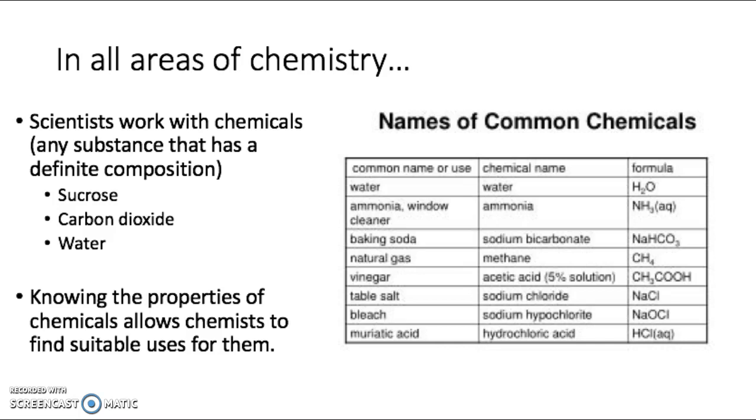On the table, you can see some common chemicals, their common name, their chemical name, and their formula. All of these chemicals are probably items that you can find in your household, and chemists have helped develop uses for these chemicals beyond what was originally known.